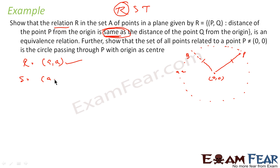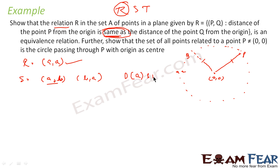For symmetric, if (A, B) exists, then (B, A) should also exist. (A, B) being in the relation means the distance of point A from center and distance of point B from center is the same. That also means distance of point B from center and distance of point A from center is the same — we have just flipped it. So it is symmetric also.